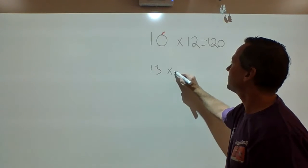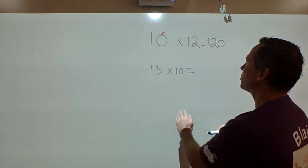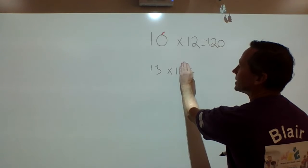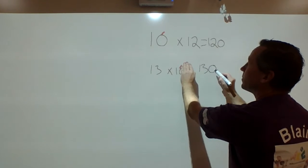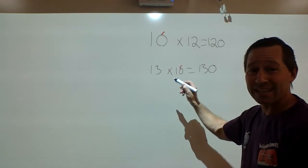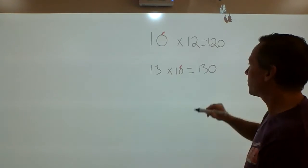So it's 13 times 10. We know 13. If I hide that zero, 13 times 1 is 13. We put a zero on the end because we're multiplying it by 10, not just 1. It's 130.